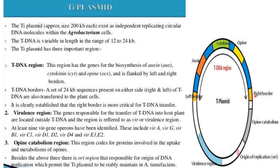The right border is more critical for T-DNA transfer. The second region is the virulence region: genes responsible for transfer of T-DNA into the host cell are located outside the T-DNA, in the region referred to as the vir or virulence region. At least nine vir gene operons have been identified: virA, virG, virB1, virC1, virD1, virD2, virD4, virE1, and virE2. The third is the opine catabolism region, which codes for proteins involved in uptake and metabolism of opines.